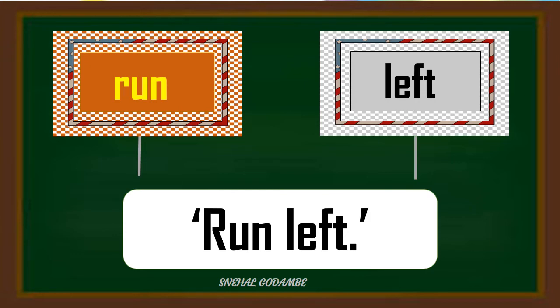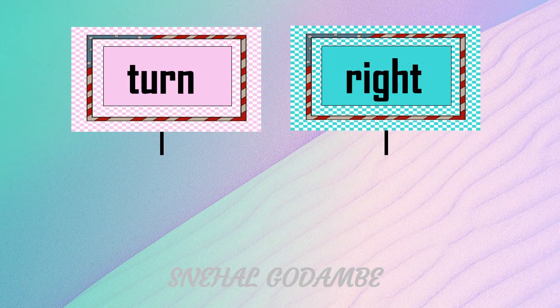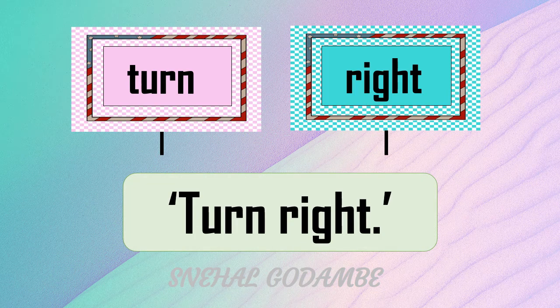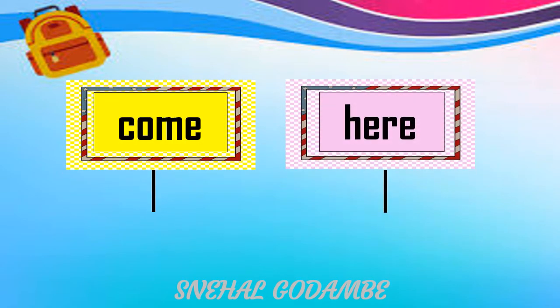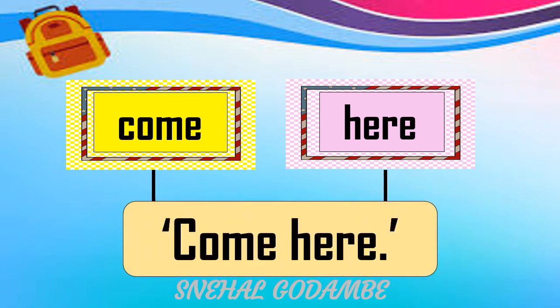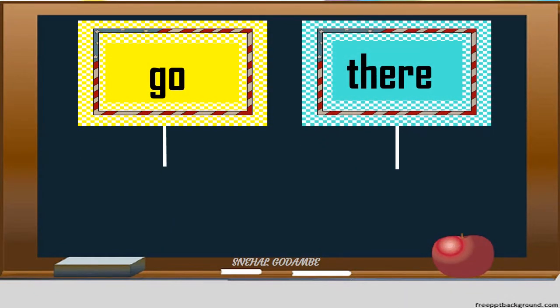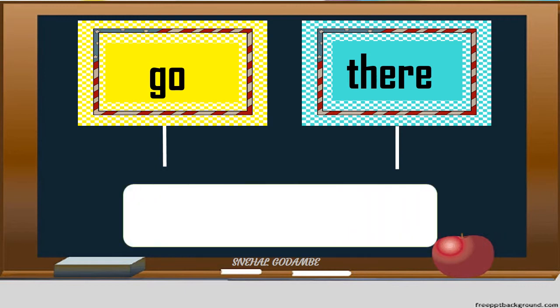You listen and repeat after me. Words turn and right — so the sentence or phrase is turn right. You can take the first word from the second basket also: right turn. First word: come. Here. So the phrase will be come here. Next: go there. So our phrase is go there.